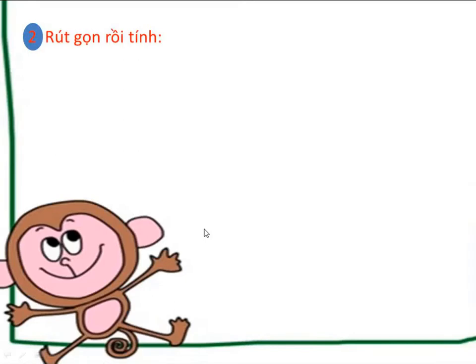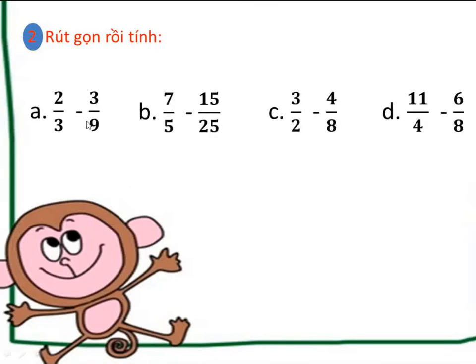Chúng ta tiếp tục chuyển sang bài tập 2. Bài tập yêu cầu chúng ta rút gọn rồi tính. Ở đây gồm có 4 câu, đó là A, B, C và D. Đề bài yêu cầu rút gọn, vậy các em nhớ lại cách rút gọn phân số: ta thấy phân số có tử số và mẫu số đều cùng chia hết cho một số tự nhiên khác 0, thì chúng ta có thể rút gọn để đưa về phân số tối giản. Đối với bài tập này, chúng ta sẽ rút gọn 1 trong 2 phân số hoặc cả 2 phân số để đưa về dạng phép trừ phân số sao cho thuận tiện nhất.